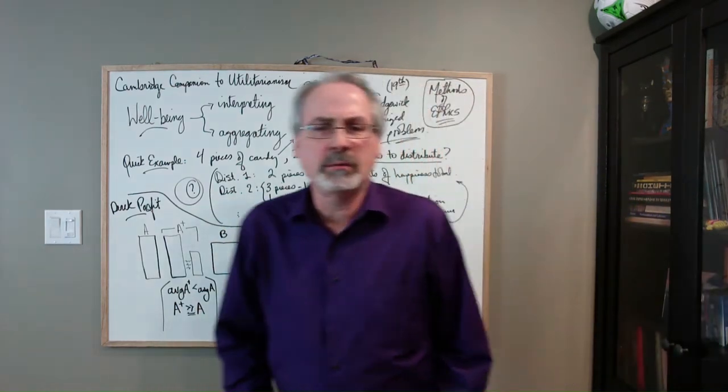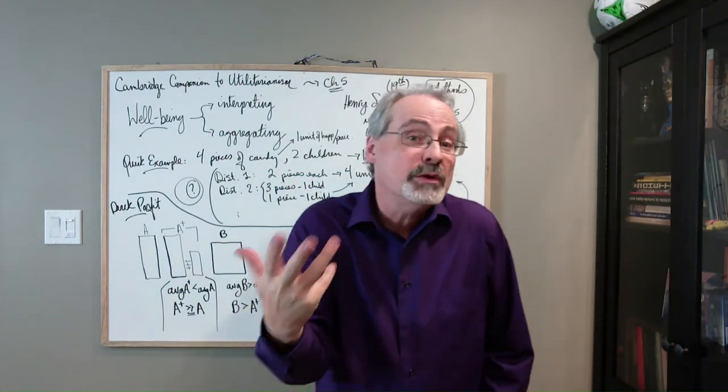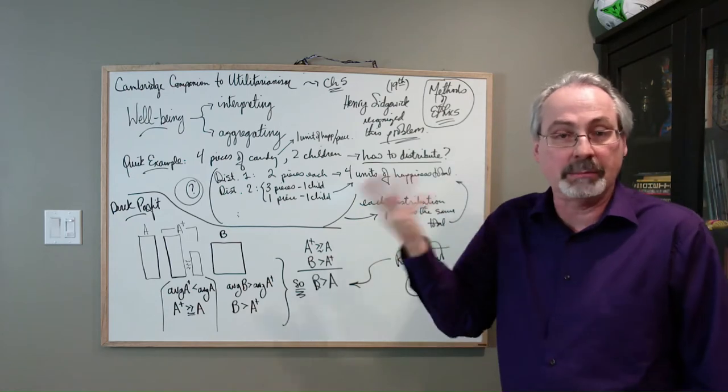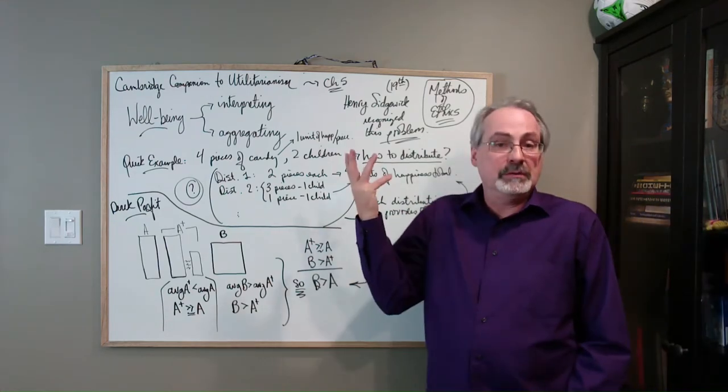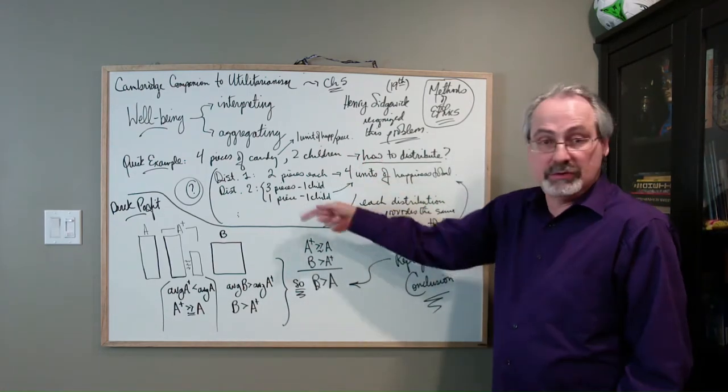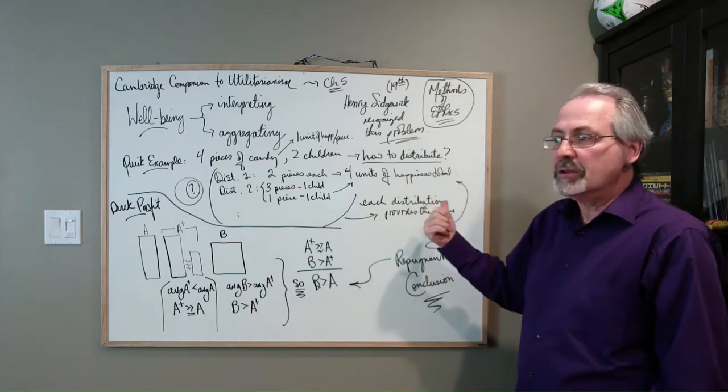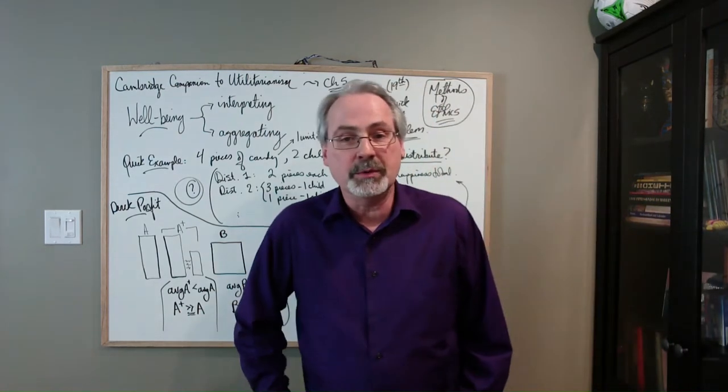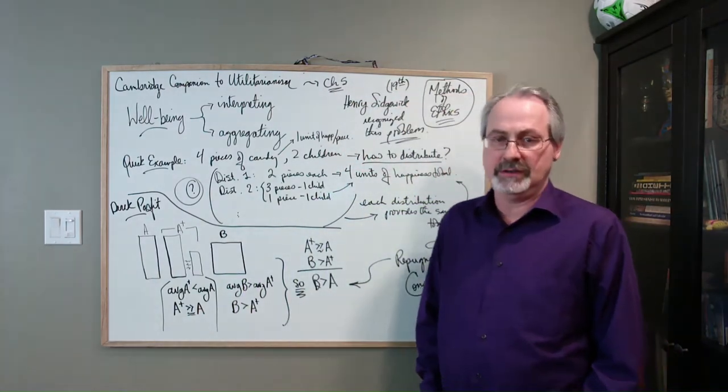And so some people say, well, utilitarianism really won't tell you which one, if you're just talking about aggregates, if you're just talking about totalities. All these distributions add up to the same totality. So you would have to introduce other principles,